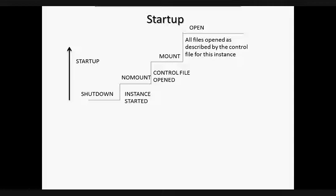After the mount stage comes the open stage. Normal database operation means that an instance is started and a database is mounted and opened. Any valid user can connect to the database and perform typical data access operations. Opening the database includes opening the online data files and online redo log files. If any data files or redo log files are not present when we attempt to open, the Oracle server returns an error. During this final stage, Oracle verifies all files can be opened and checks database consistency. If necessary, the SMON background process initiates instance recovery.